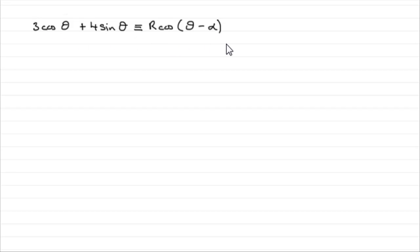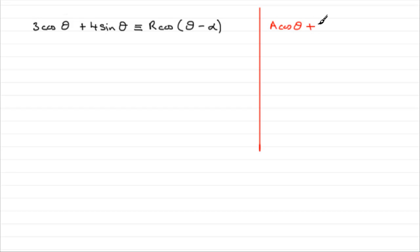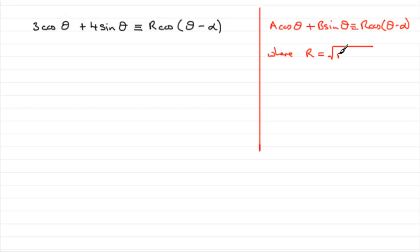This is a very common type of question. Just to give you a bit of background: it can be shown that if you've got anything of the form a cos theta plus b sin theta, this can be written in the form r cos theta minus alpha, where r is equal to the square root of a squared plus b squared, and the constant alpha is given by the inverse tan of b over a.